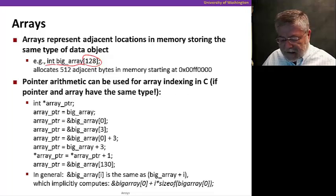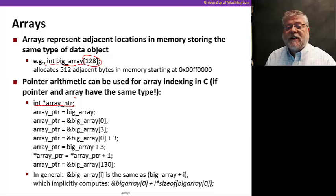Now, pointer arithmetic can be used for indexing in this array. Let's take a look at some examples. First, let me start with just declaring a pointer to an integer type. We're going to call that pointer array_ptr.